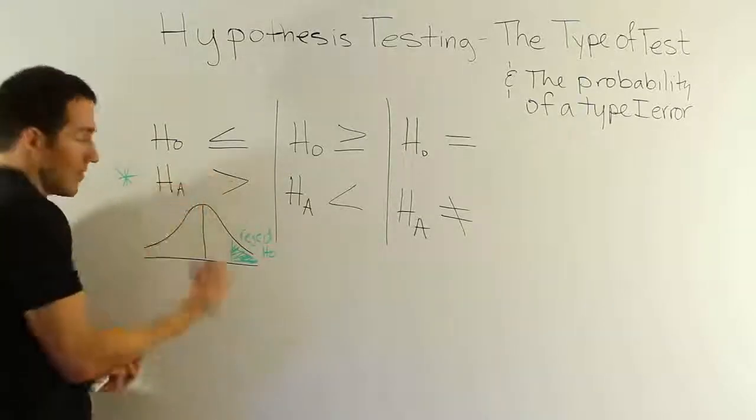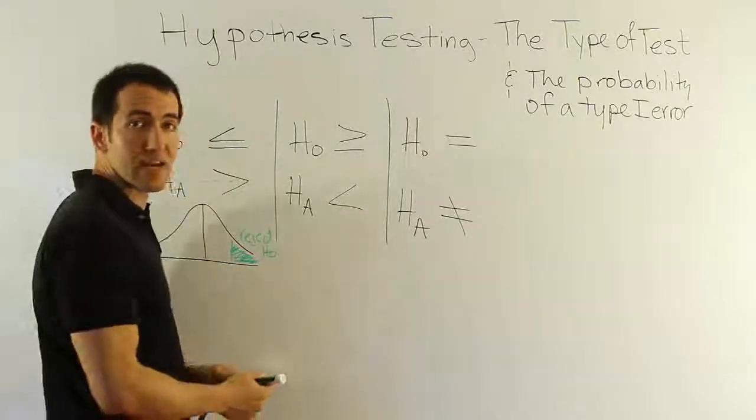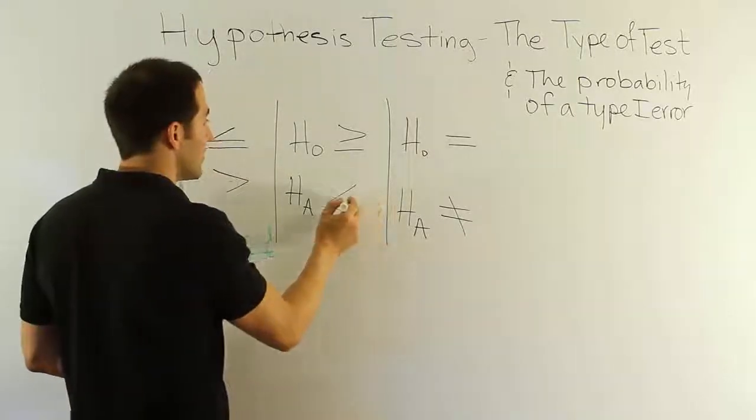But it's like an arrow pointing, so it's easy to figure out. It's a right-tailed test. Look at HA to see that. Look at HA here. Which way is that arrow pointing? It's pointing to the left.